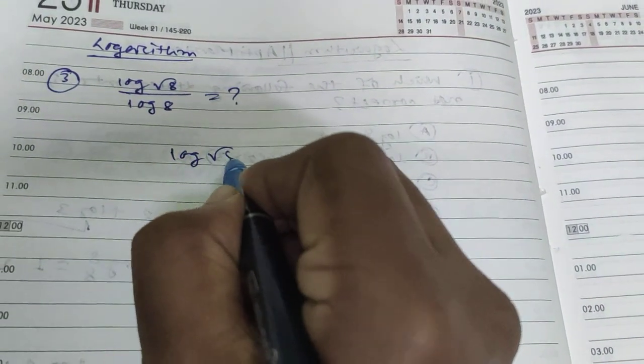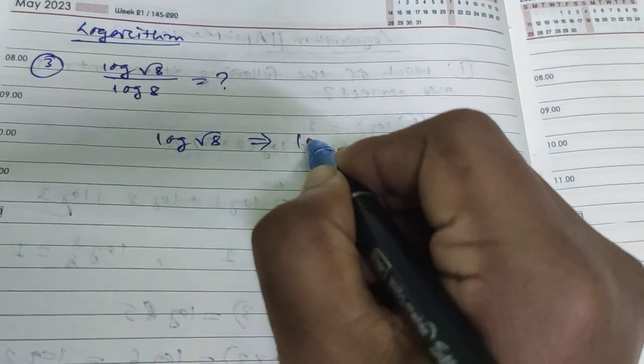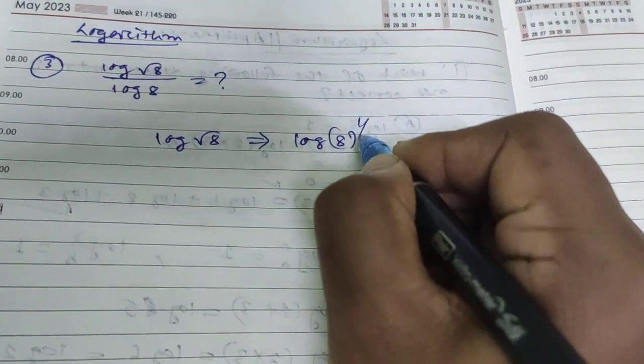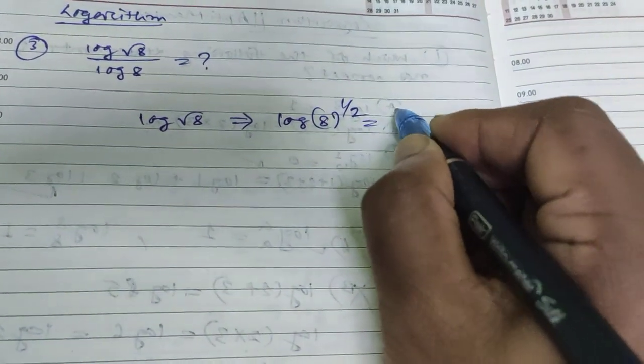Log root 8 means log 8 to the power 1/2. You can write it as 1/2 log 8.